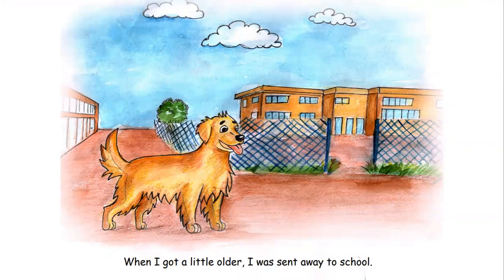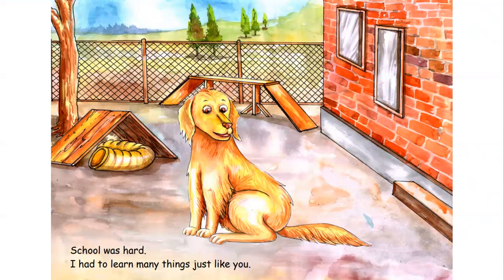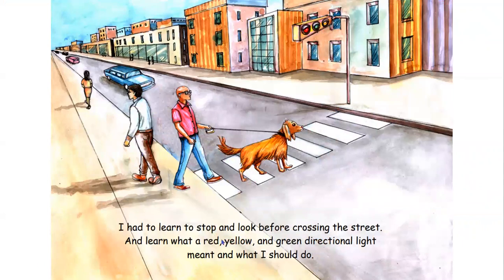When I got a little older, I was sent away to school. Take a look at this illustration — does Abe look excited for school? Give me a thumbs up or a thumbs down. Good job! He does look happy and ready for school. School was hard. I had to learn many things just like you. I had to learn to stop and look before crossing the street, and learn what a red, yellow, and green directional light meant and what I should do. What are those lines that our friend Abe is walking on? What is that called when we cross the street with those white lines? Good job! It's a crosswalk, right? It's the designated area where it's safe to cross the street.